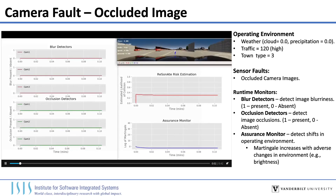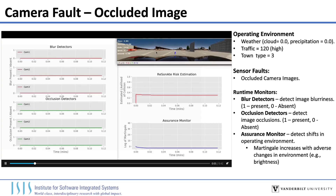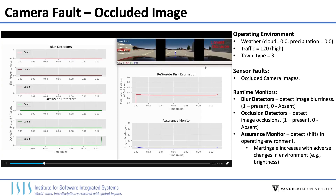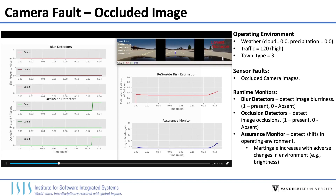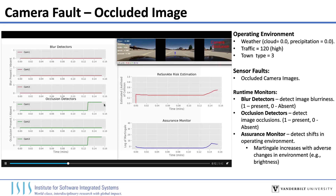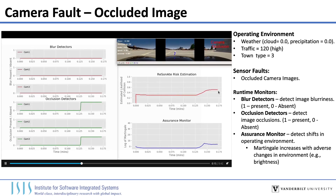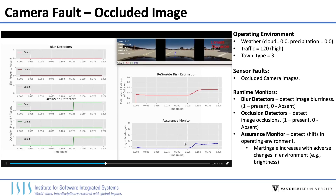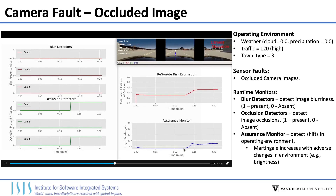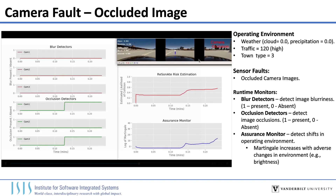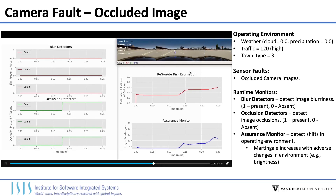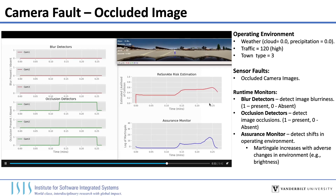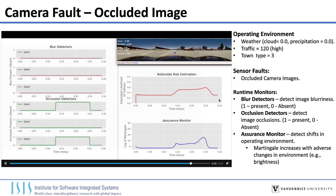This shows an example of the vehicle operating in the simulator. We inject a camera fault where the camera is occluded. Our occlusion detectors notice that, and we see our risk score goes up. Our assurance monitor is only somewhat a weak detector of that fault condition, so it goes up a bit but doesn't go very high. Then the camera occlusion clears, and the risk score quickly returns back to nominal — the assurance monitor goes down and normalizes at the nominal value.